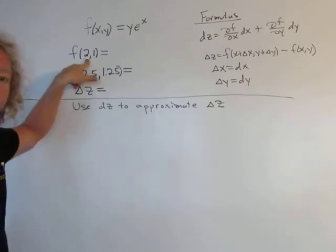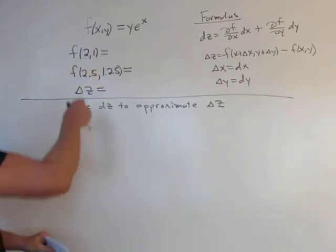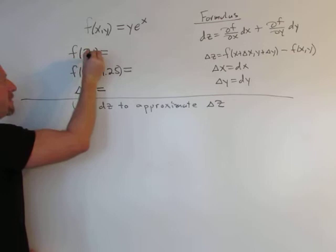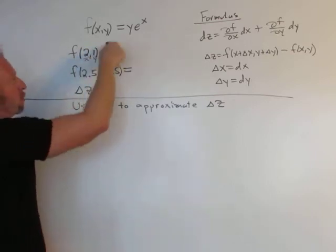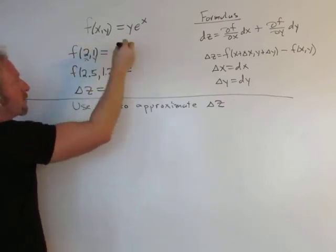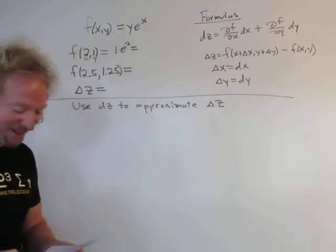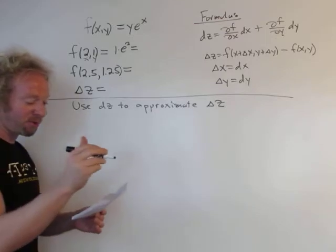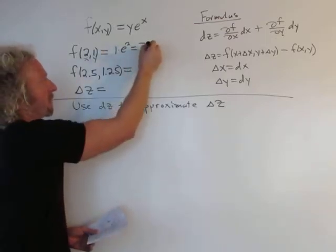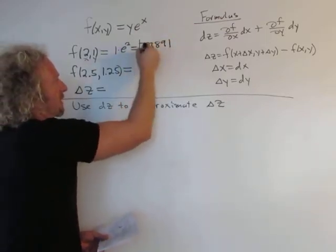First we have to evaluate f. This is your x—you've got to be careful—and this is your y. If you replace y with 1 and x with 2, you get that. If you work this out, I did all these computations ahead of time, you get 7.3891. That's the first answer.